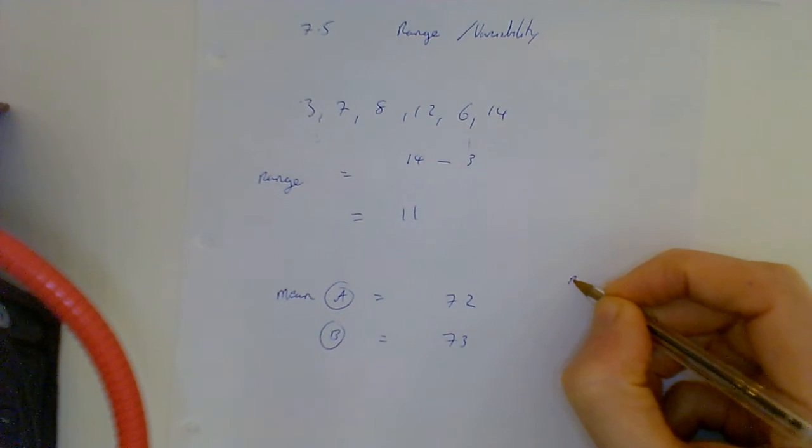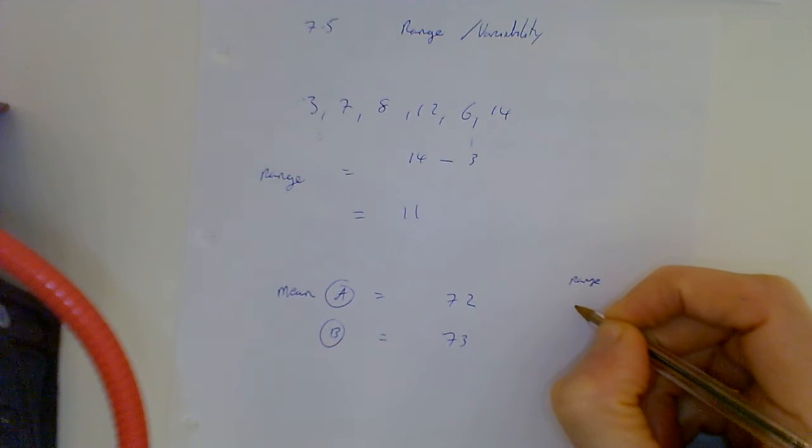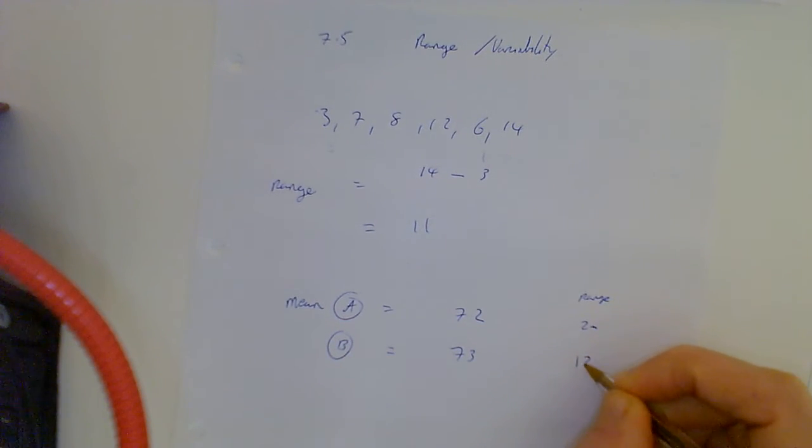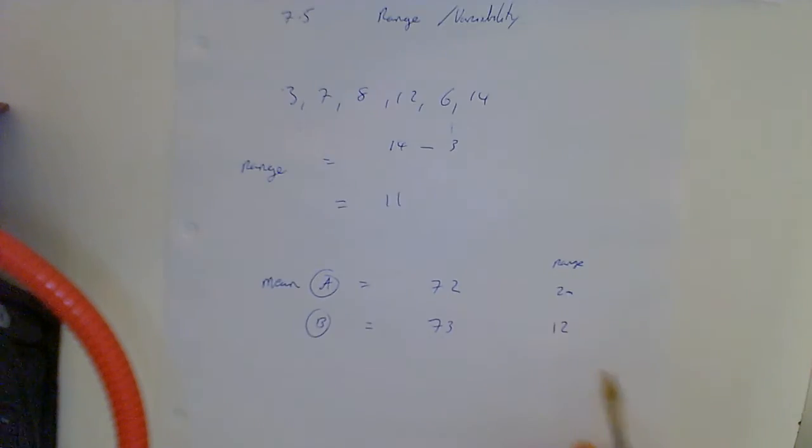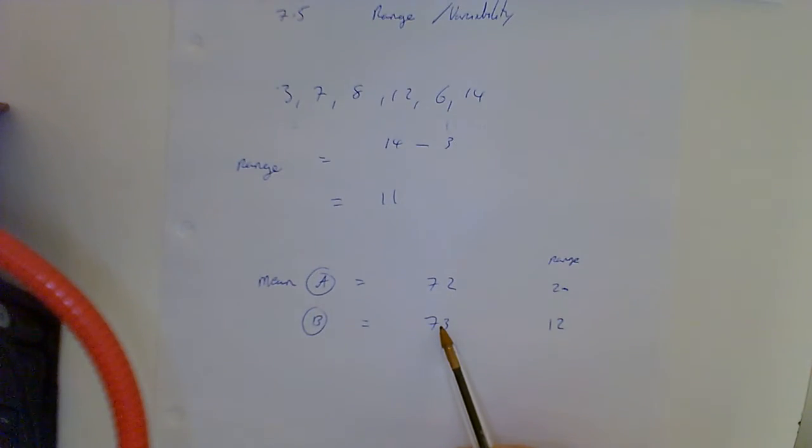Okay, but this guy's range is 2, this one is 12. Well what would you get from this data? This guy's got a higher average, but he's also incredibly unreliable because one day he'll get a really good score, one day a really bad one.